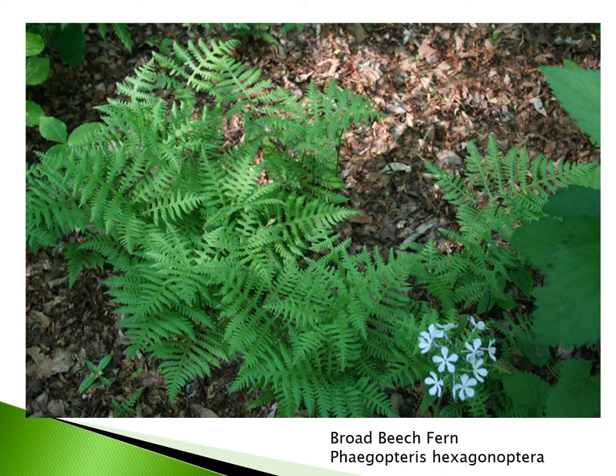The broad beech fern, Phegopteris hexagonoptera, has a broader frond than the long beech fern with a slightly different texture. I love this fern very much — it's a great species for the garden. It's also slow to become established, a short creeping species that spreads very slowly. Neither the long nor the broad beech fern makes a great ground cover because they are slow-moving, but they're really nice to establish as a clump for diversity of foliage and texture.